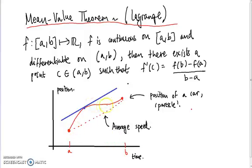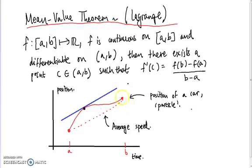If you imagine this graph as the position of a car or particle moving in a straight line, then its first derivative — the steepness of the position-versus-time graph — is really just the speed at which the particle is traveling. The gradient of the secant line represents the average speed. Because we're moving continuously from some initial speed to some final speed, we ought to expect at some point our instantaneous speed to equal our average speed.